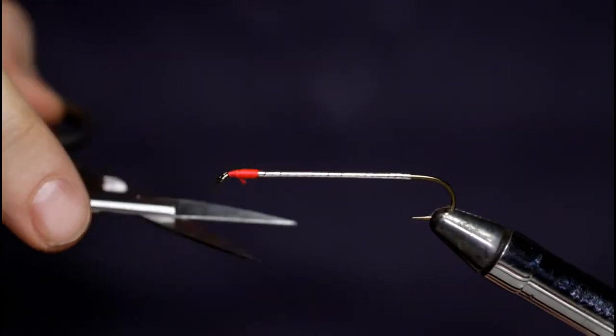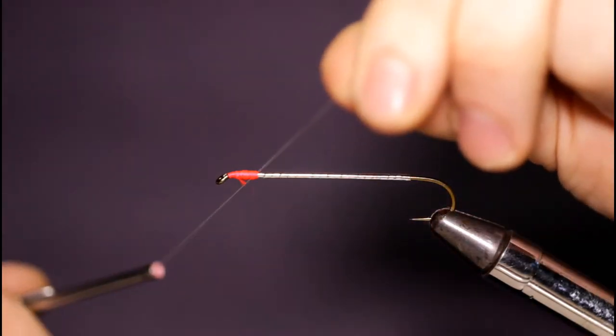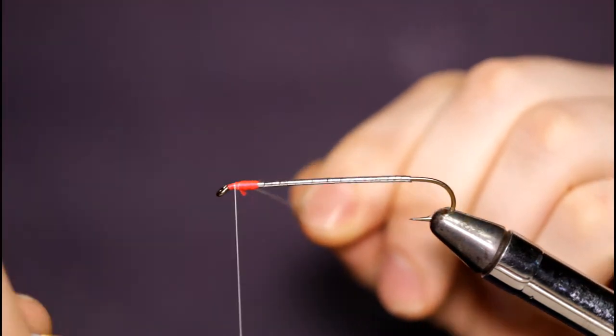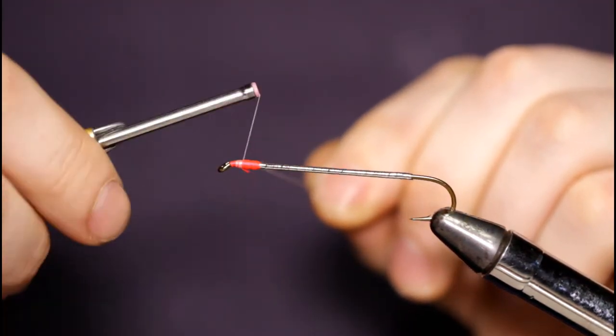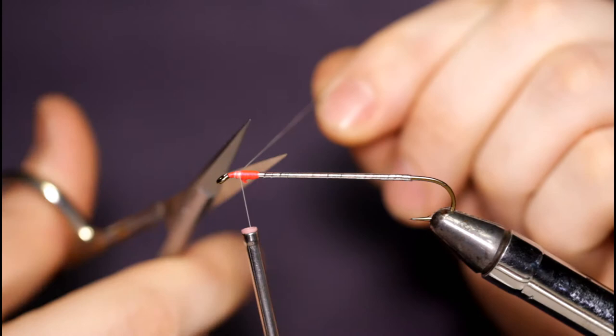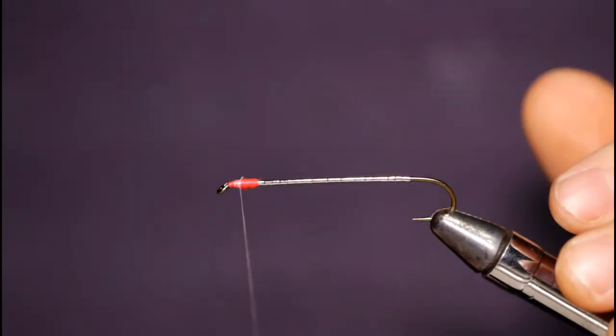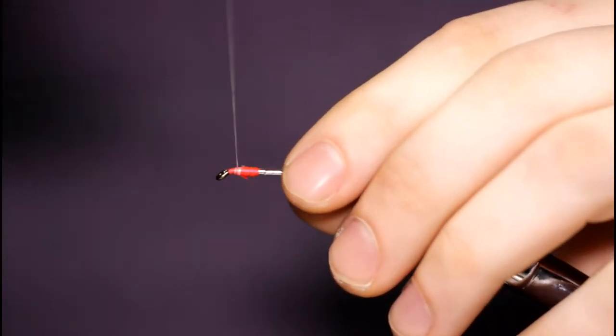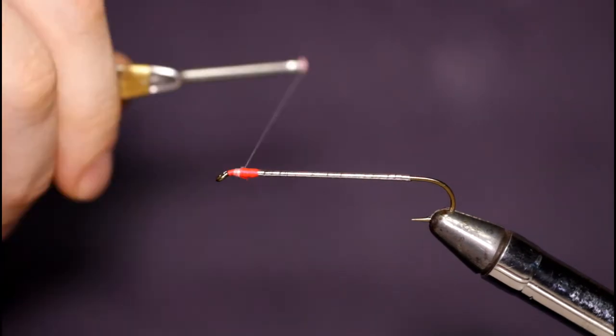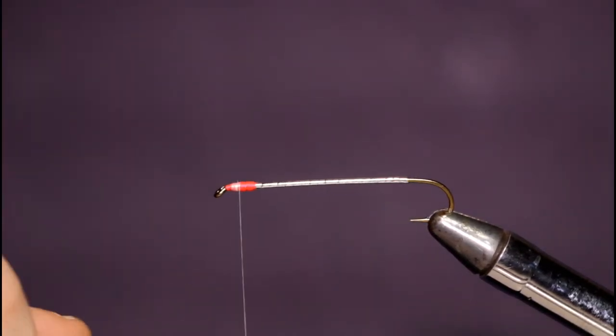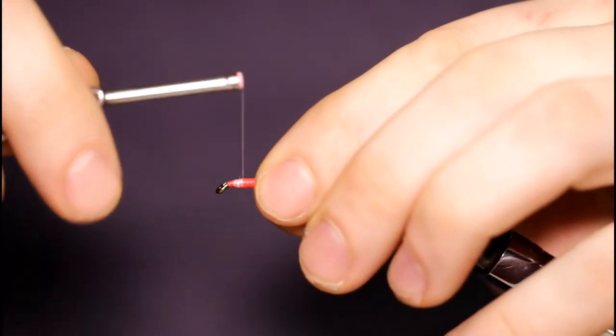Now I'm going to come in with some white thread again, but this time smaller. This is a size 70 denier. Definitely do not want to use a large size for this because I'm going to be tying in six different colors of bucktail plus a peacock hurl topping. If I used 210 it would just be way too bulky by the time I was done.